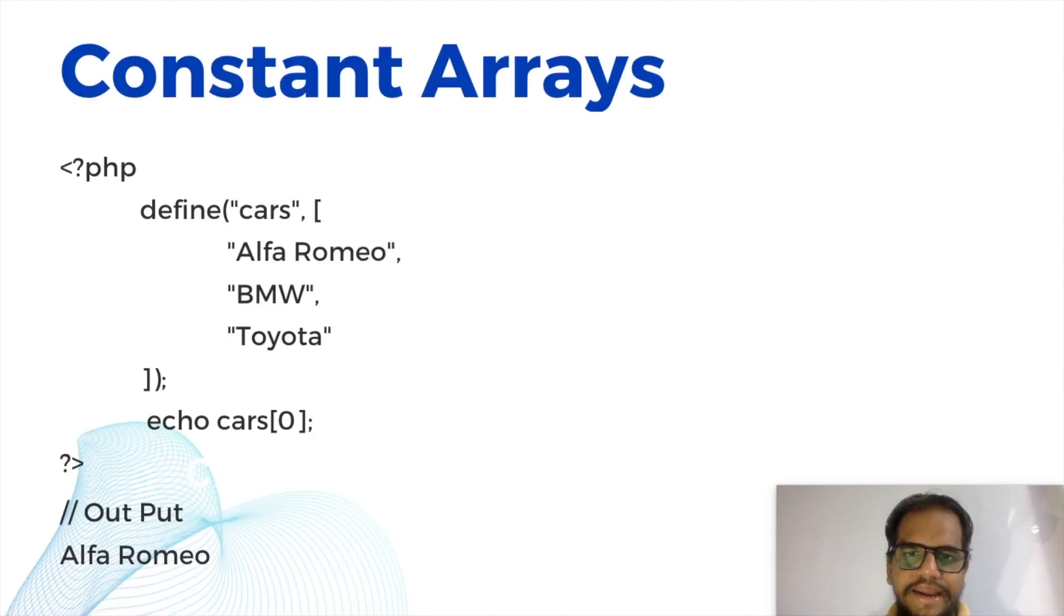Constant arrays. Define cars. Car is the variable name, and this will be the array they are mentioning. Alfa Romeo, BMW, Toyota like this.